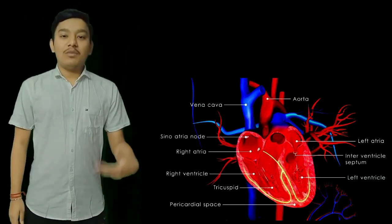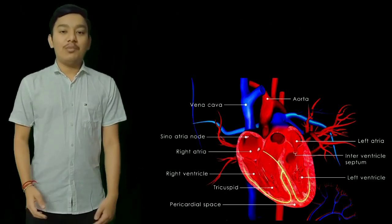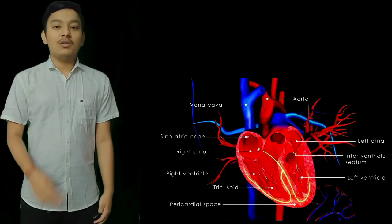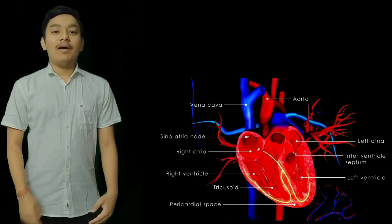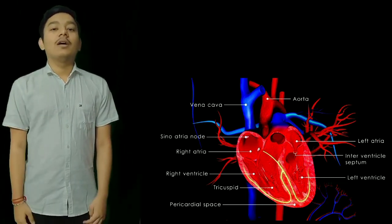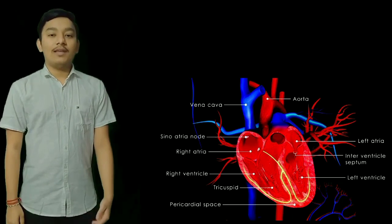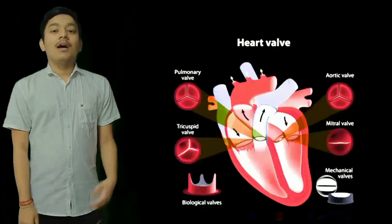The chambers of your heart: the heart is made up of four chambers — two upper chambers known as the right atrium and left atrium, and two lower chambers known as the right ventricle and left ventricle.